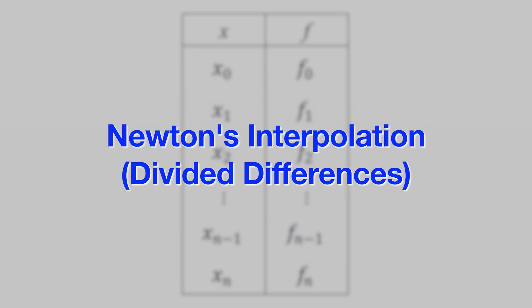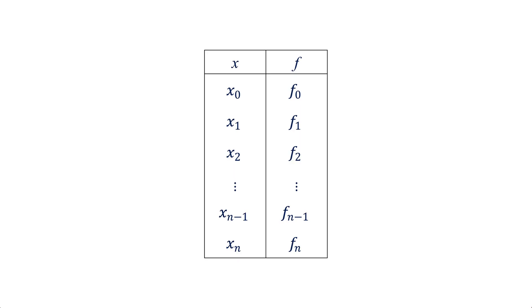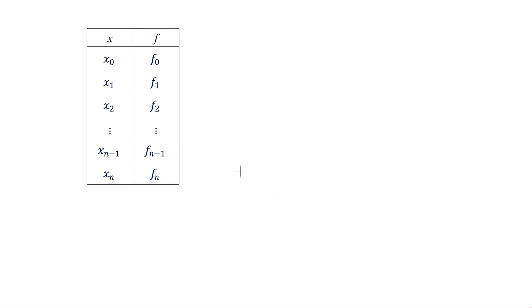Suppose we have a set of data pairs of x and f values. Note that the subscripts go from 0 to n, where n will be the largest degree of a polynomial that can be obtained by this method. We can plot these data pairs on a graph.